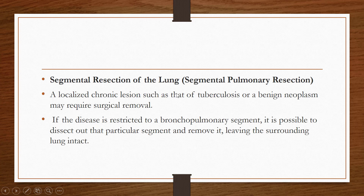There can also be segmental resection of the lung. A localized chronic lesion such as tuberculosis or a benign neoplasm may require surgical removal. If the disease is restricted to a bronchopulmonary segment, it is possible to dissect out that particular segment and remove it, leaving the surrounding lung intact.